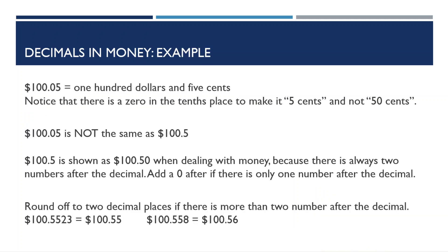Let's do some examples with money. The number shown at the top here is read as $100.05. It's really important to remember that there's a zero in the tenths place to make it 5 cents, and not 50 cents. You can see that 100.05 is not the same as 100.5. But, 100.5 is shown as 100.50 when dealing with money, because there's always two numbers after the decimal. We add a zero after if there's only one number after the decimal.